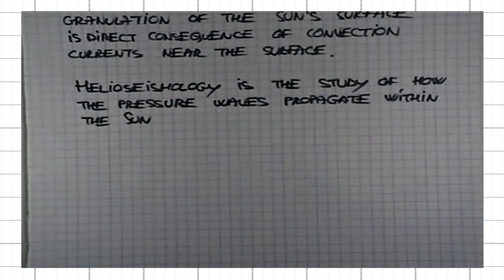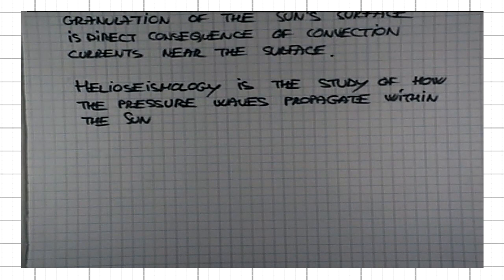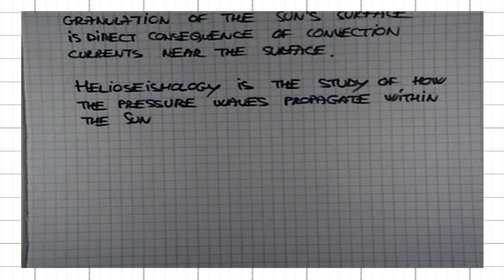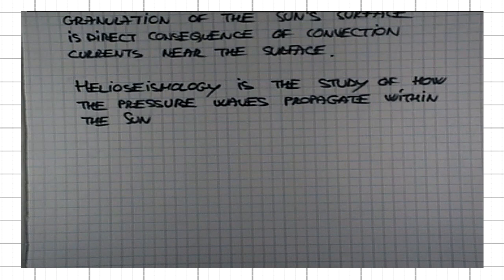It turns out that depending on the details of energy and mass transport within the sun, there are ripples on the surface of the sun. By analyzing these ripples, we can actually tell what is going on inside.